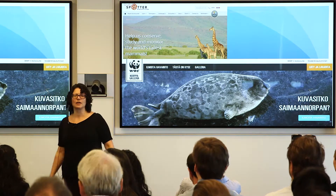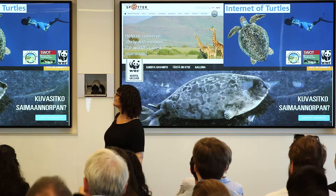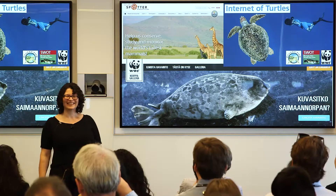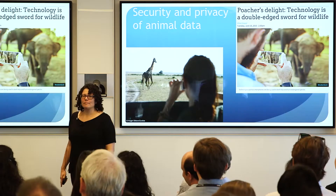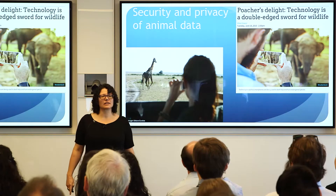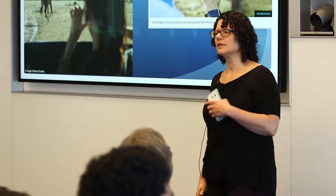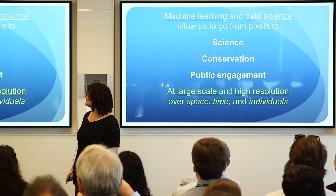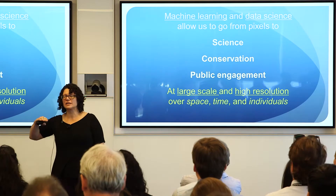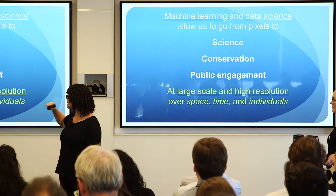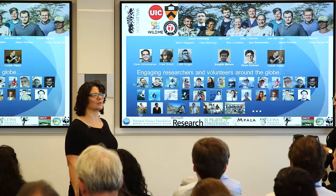One of our big concerns now is also security and privacy of data — because not only can we track the animals, poachers can too. But machine learning and data science allow us to really scale from pixels to large scales and high resolutions over space, time, and individuals, with many people who engage with it. Thank you.